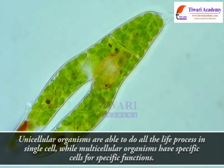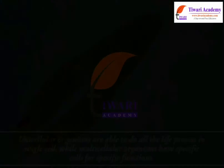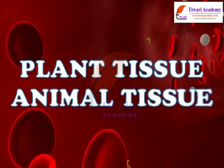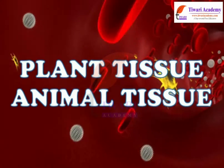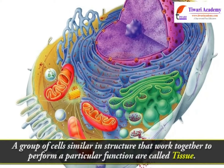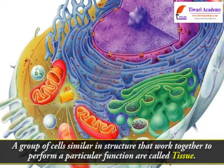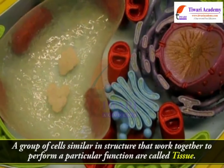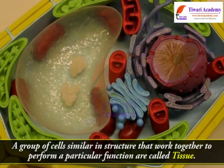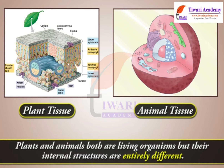Unicellular organisms are able to perform all life processes in a single cell, while multicellular organisms have specific cells for specific functions. There are plant tissues and animal tissues. Plants and animals are both living organisms, but their internal structures are entirely different.